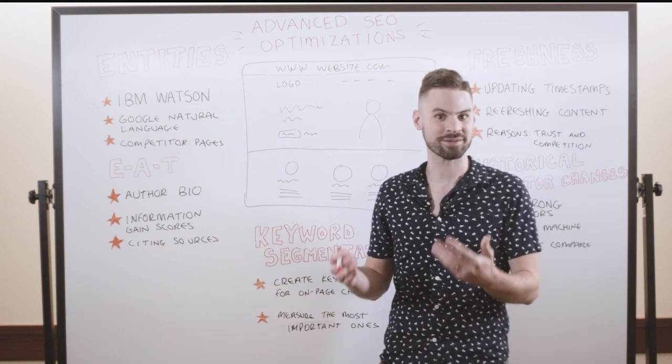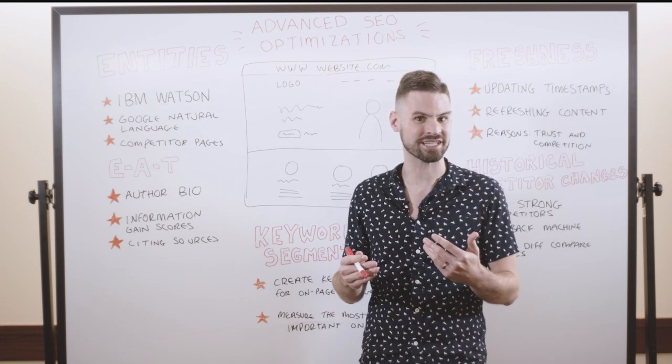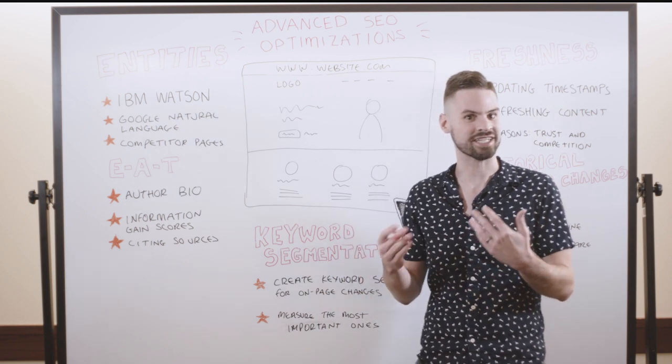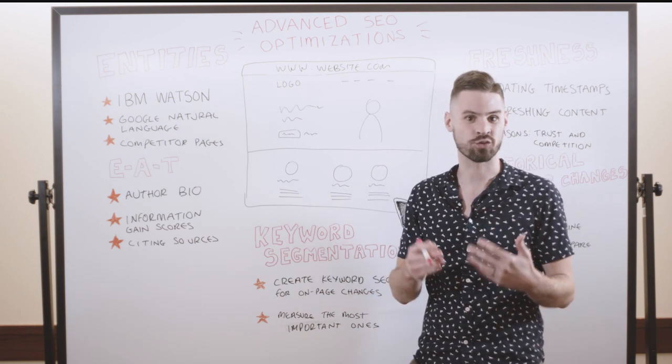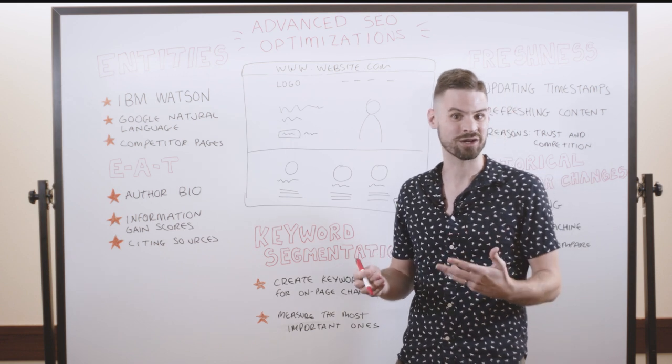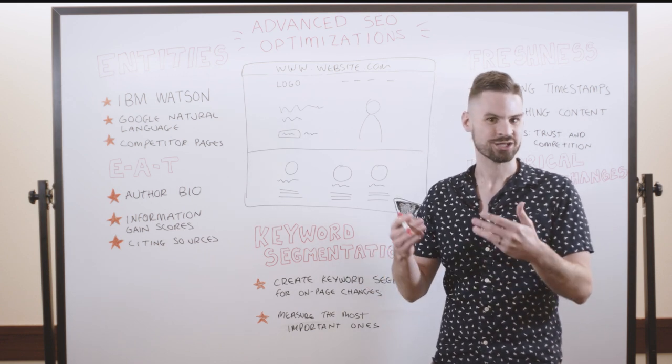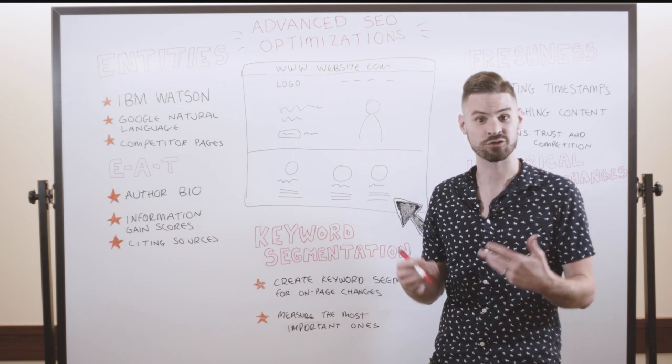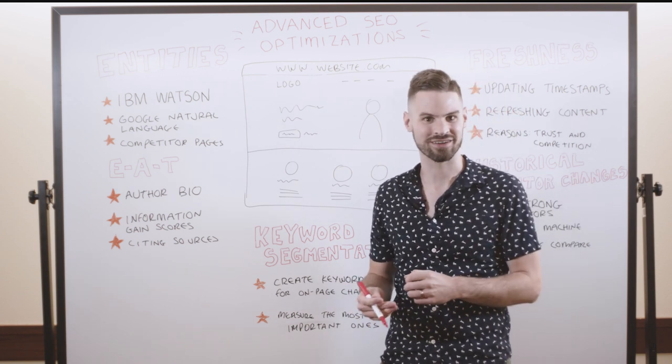Commonly in SEO, when we think about on-page optimizations, we're typically thinking about core places to include the keywords, such as the title, the H1, the URL within the content. But some people might be wondering, how can you take your on-page optimizations to the next level and get beyond some of those basic tactics? So that's what I want to cover today.